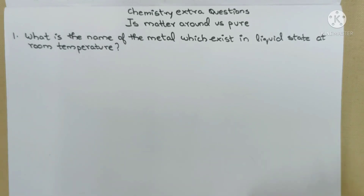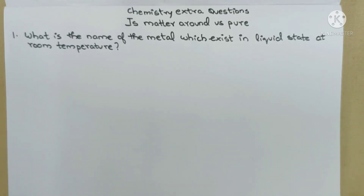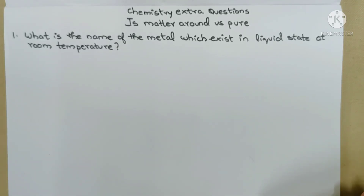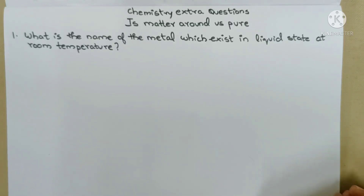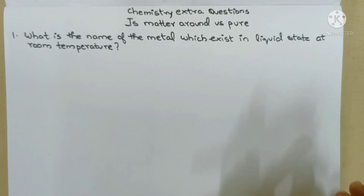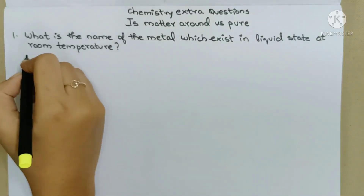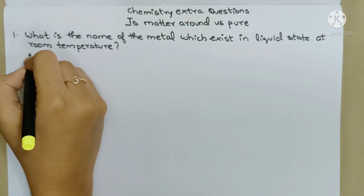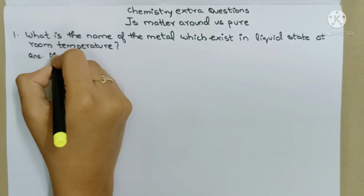First question: What is the name of the metal which exists in liquid state at room temperature? We will talk about the two metals in liquid state at room temperature. One is bromine, two is mercury. The answer is mercury.